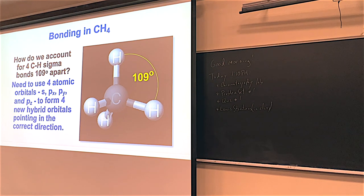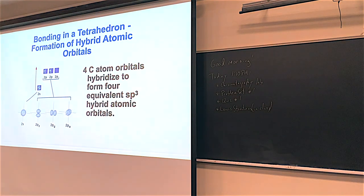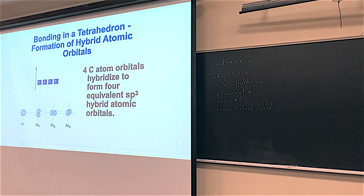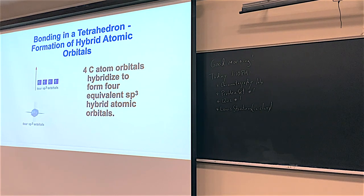Valence orbitals of carbon are the 2S orbital and the three 2P orbitals. When these atoms form methane, their orbitals are thought to hybridize to form four equivalent orbitals. Because each hybrid orbital for the carbon atom is composed of one part S orbital and three parts P orbital, they are called SP3 orbitals. The energies of the hybrid orbitals are the average of the original atomic orbitals.